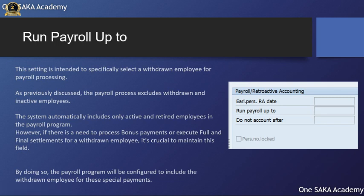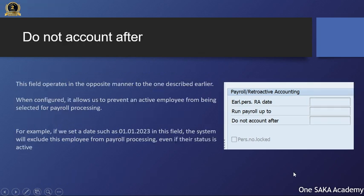Let's understand the 'Do Not Account After' field behavior. This field operates in the opposite manner to the one described earlier. When configured, it allows us to prevent an active employee from being selected for payroll processing. For example, if we set a date such as the 1st of January 2015 in this field, the system will exclude this employee from payroll processing, even if their status is active.